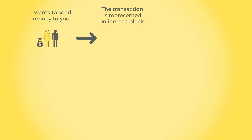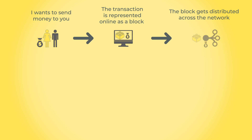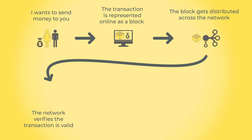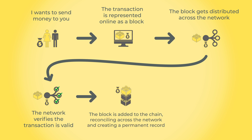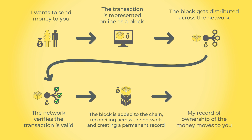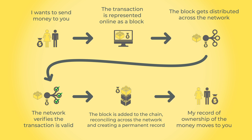Let's see how blockchain works in a practical example. I want to send money to you. The transaction is represented online as a block. The block gets distributed across the network. The network verifies the transaction is valid. The block is added to the chain, reconciling across the network and creating a permanent record. My record of ownership of the money moves to you.